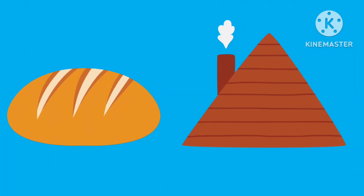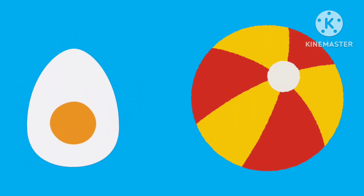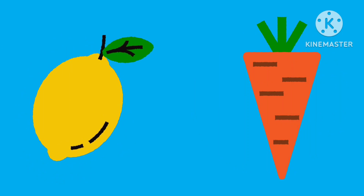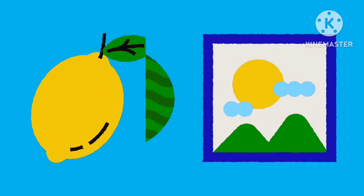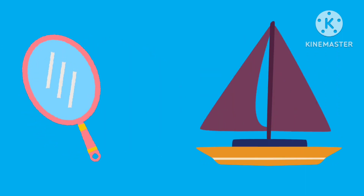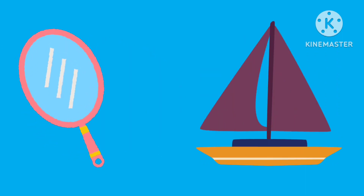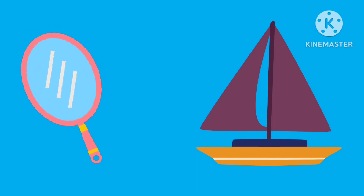This one has an oval shape. An egg also has an oval shape. This lemon is also oval shape. Watermelon also has an oval shape. This badminton racket also has an oval shape.